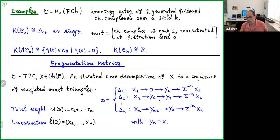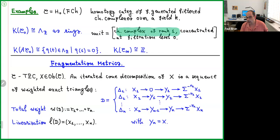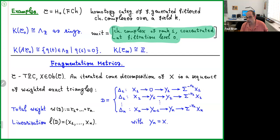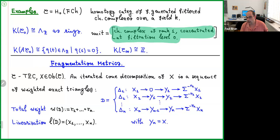In the example of the homotopy category of filtered chain complexes, the K-group of C₀ is the ring of Novikov polynomials, where the unit is represented by the chain complex of rank one concentrated in degree zero and filtration level zero. The K-group of the acyclics consists of all Novikov polynomials that vanish when you plug in T = 1. And K of C∞ is just ℤ, since C∞ is the homotopy category of filtered chain complexes where the filtration is forgotten, and the Euler characteristic gives the isomorphism.